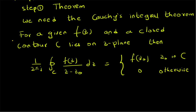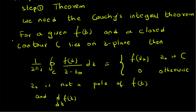That is, when Z_naught does not lie in C, the integral is 0; and if Z_naught lies within C, the value is f of Z_naught. Note that for this theorem, Z_naught is not a pole of f of Z — that is, f of Z at Z_naught should not be infinity — and the derivative of f of Z with respect to Z exists.